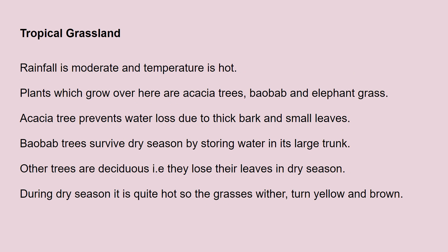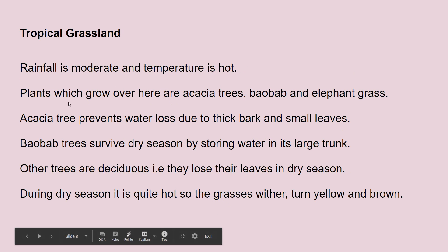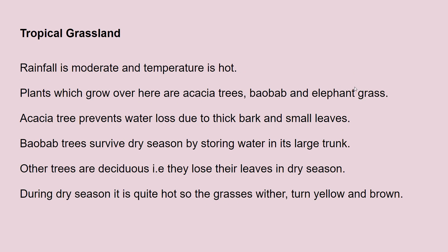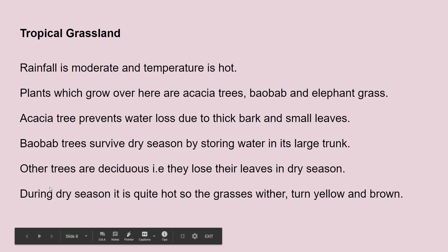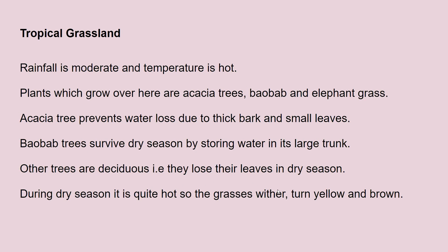For tropical grassland, you need to know the temperature and rainfall, and the plants that grow there: acacia trees, baobab, and elephant grass. The acacia tree prevents water loss due to its thick bark and small leaves, whereas the baobab stores water in its large trunk. Other trees are deciduous — they lose their leaves in the dry season to use minimum water. During the dry season the grasses wither and turn yellow and brown.